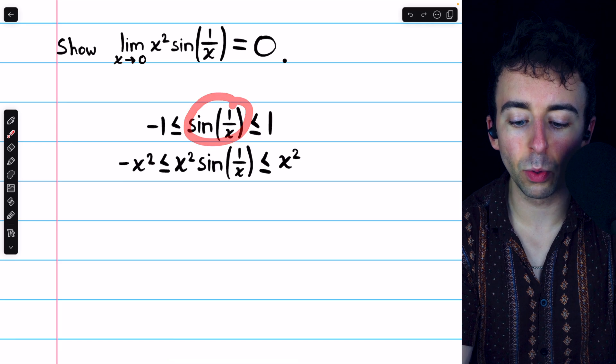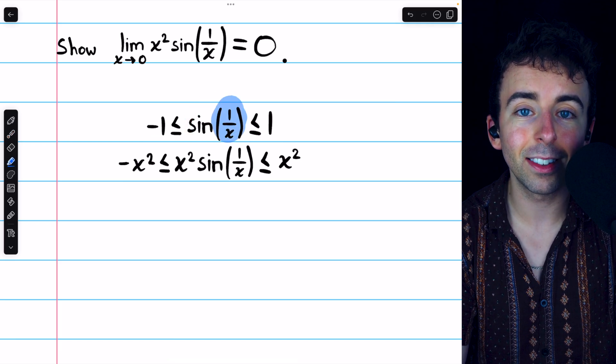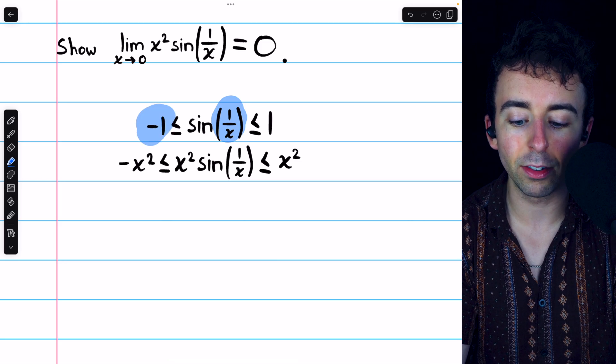So we begin with what we know: sine of 1 over x is between negative 1 and positive 1. Remember, it doesn't matter what the input is, sine has to lie between these two values.